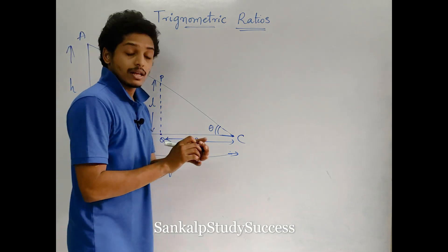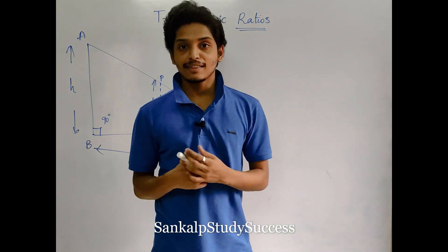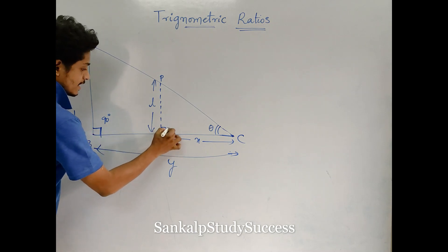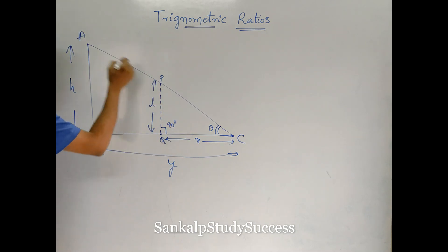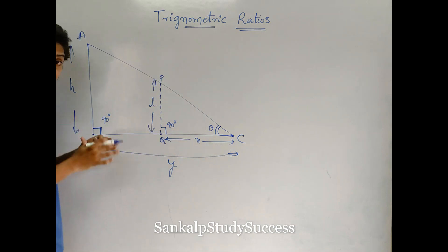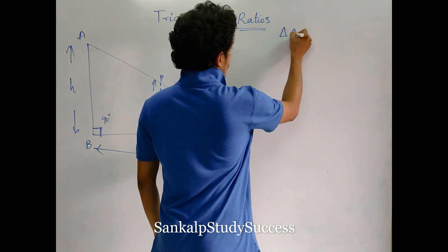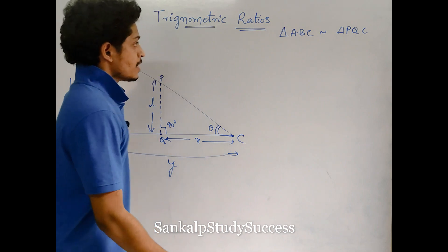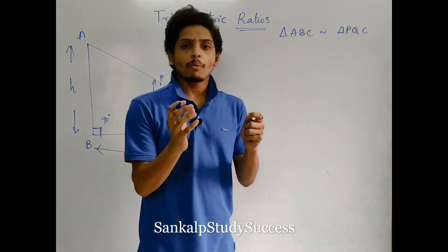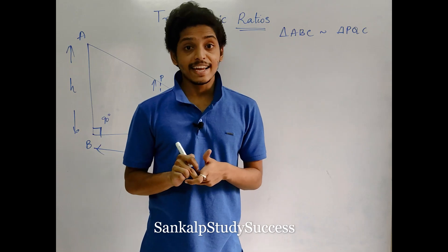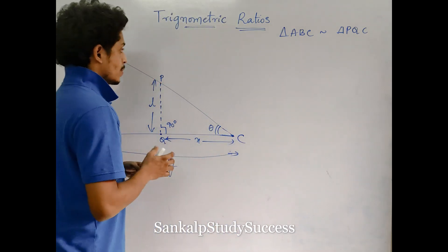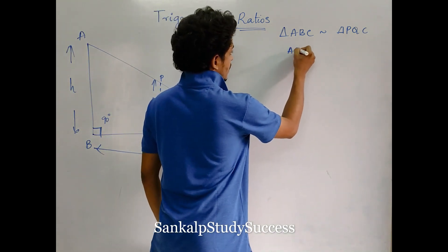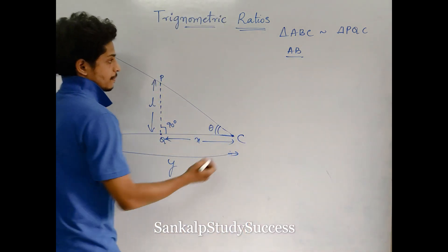We can use the property of similar triangles. Two triangles are similar because both have 90 degrees, and these two lines are parallel. So triangles ABC and PQC are similar triangles. The main property of similar triangles is that corresponding sides ratios are equal. AB by PQ equals BC by QC — corresponding sides ratios are equal.